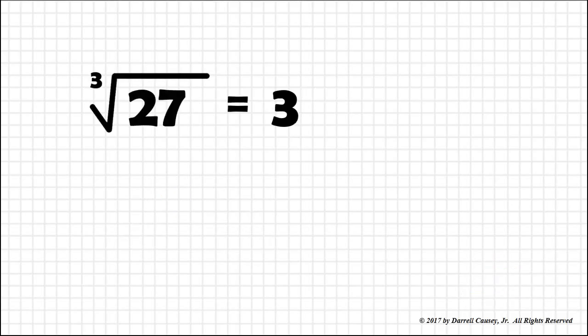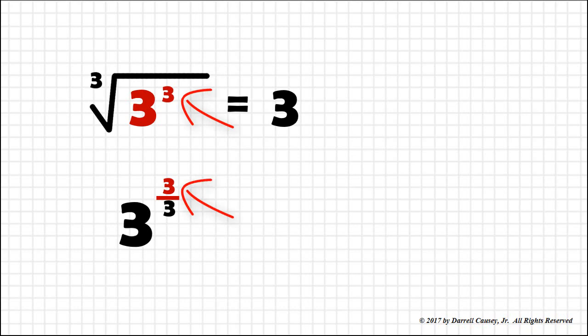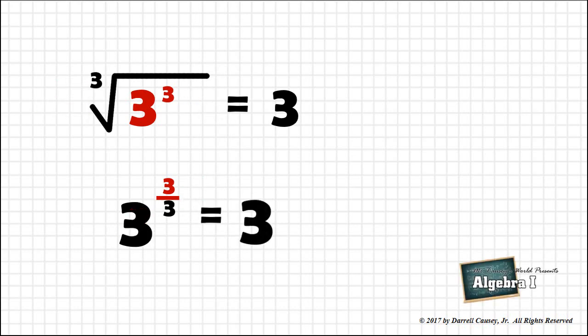Let's look at another example. We have the cube root of 27 equals 3. Let's look at that as a fractional exponent. First we'll change 27 into the cube root of 3 cubed, then write it as 3 over 3. Note where the numerator is and where the denominator is. That equals 3 to the first power or 3.